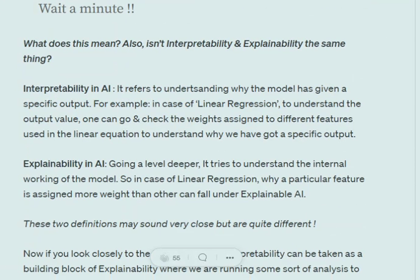So if you understand, interpretable AI refers to why the model is giving a particular result. It's more of a shallow understanding of the model. If a particular feature X is assigned this weight, then we are getting this result. If it is assigned some negative weight, we are getting this result.